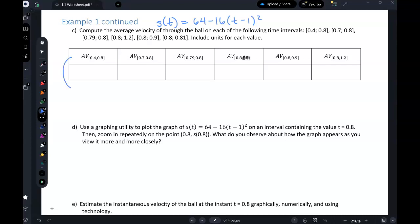Average velocity, this AV, we won't use that notation a ton this quarter. It's just kind of a temporary one. But basically it's asking for average rate of change from 0.4 to 0.8. So we'll plug in 0.8 and plug in 0.4 and subtract, and then we'll divide by 0.8 minus 0.4.